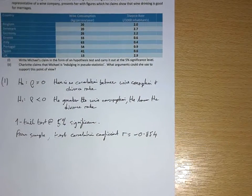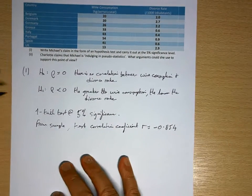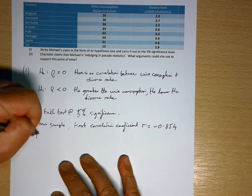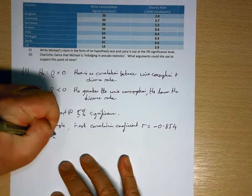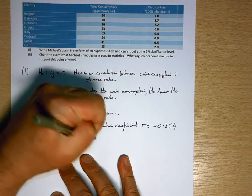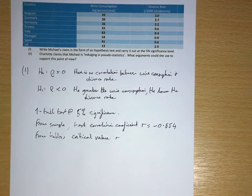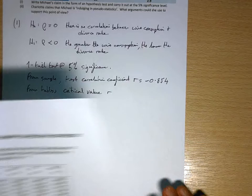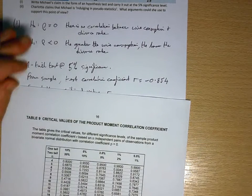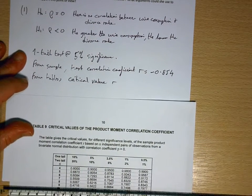So that's our calculated test correlation coefficient. Now from the tables we get our critical value.